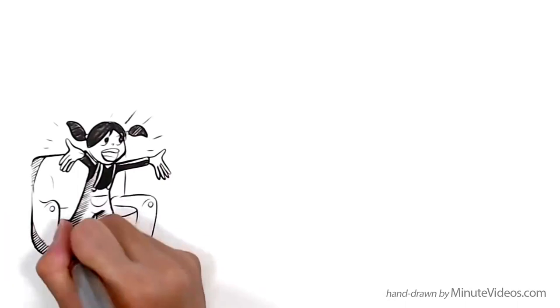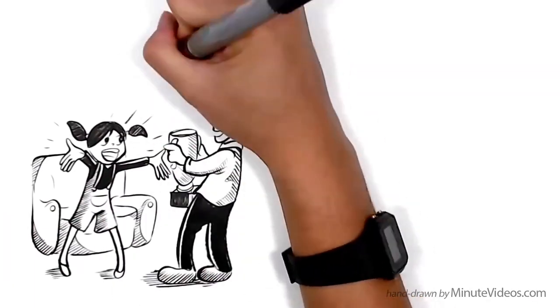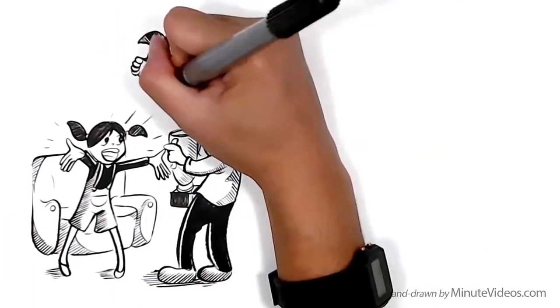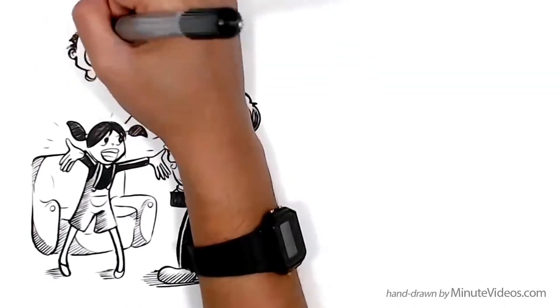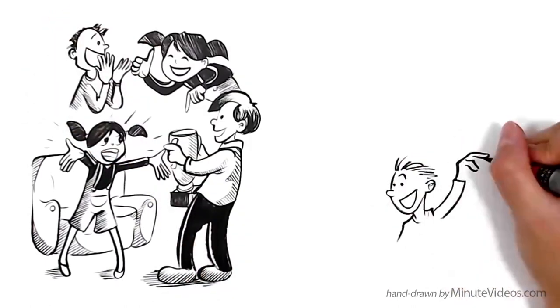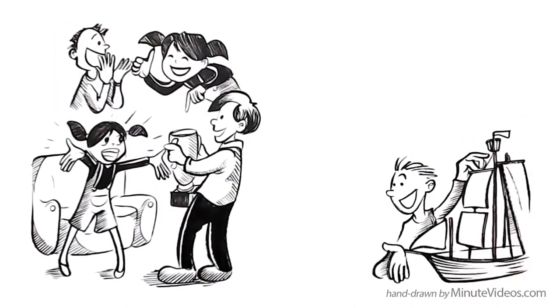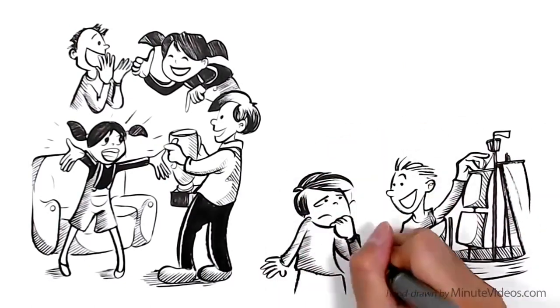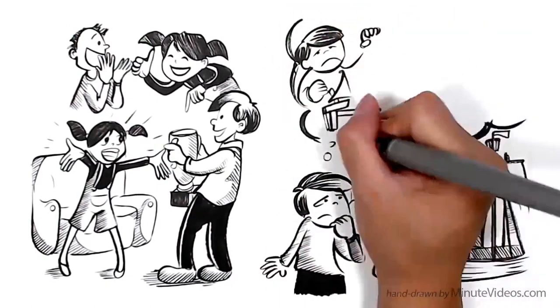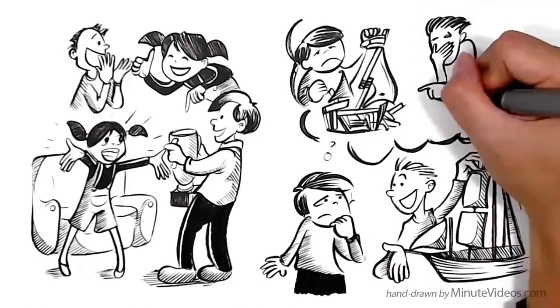Ann likes to see others succeed. It inspires her. She knows that if she motivates her friends to get better, she herself is likely to grow too. If his friends try new things and succeed, Jay feels threatened. He's afraid that their success will put pressure on him to do more with his life too.